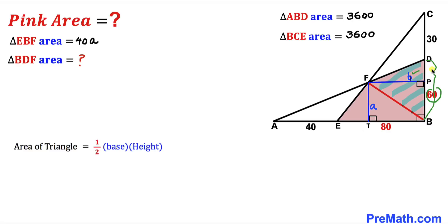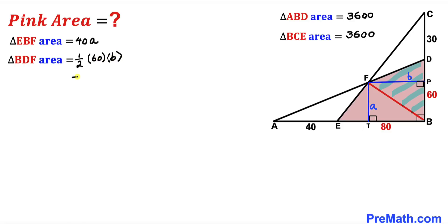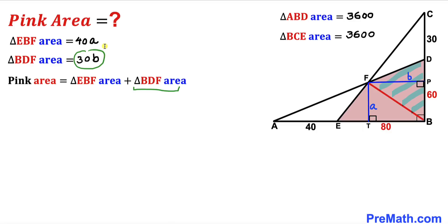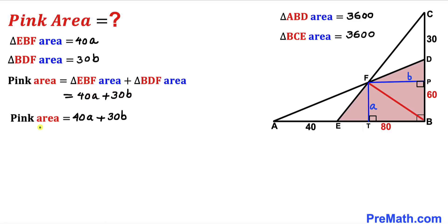For triangle BDF, using the same formula, the base is 60 and the height is lowercase b, so the area of triangle BDF equals one-half times 60 times b, which gives us 30b. Therefore, the pink region area equals 40a plus 30b. Let me label this as Equation 1.